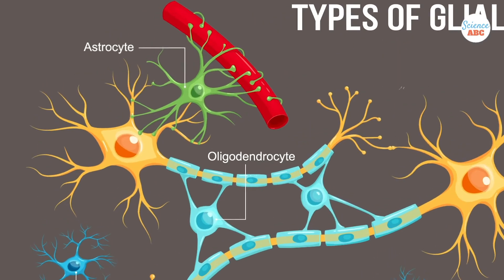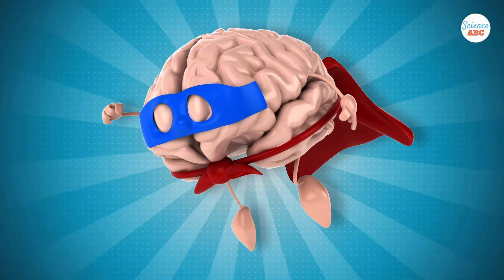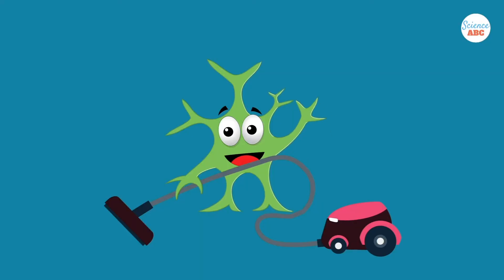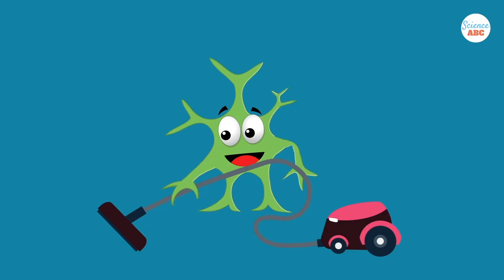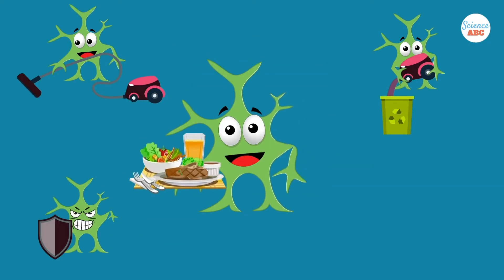The second most abundant glial cells are the astrocytes. Most of their functions relate to keeping the brain in top form. They maintain and clean the surroundings of the neurons, recycle important chemicals, protect the neurons, and provide them with nutrition.